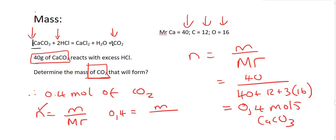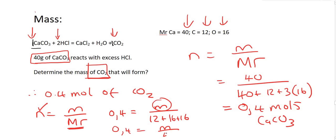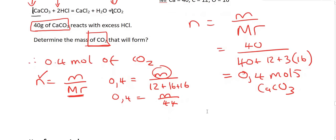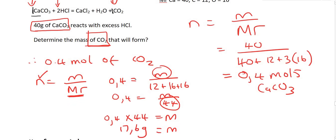The mass we don't know, and we need the molar mass of CO2: carbon is 12 and there are two oxygens, so 16 plus 16 gives us 44. So 0.4 equals m over 44, and to get the mass by itself you multiply both sides by 44 — 0.4 multiplied by 44 gives us 17.6 grams.